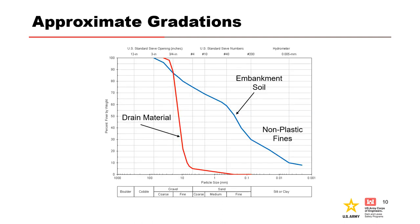The zone 1 embankment soil is broadly graded with 30% fines, 50% sand, and 20% gravel, with approximately 15 to 20% cobbles and boulders. The drain was supposed to be designed using Soil Conservation Service criteria in effect at the time from 1968. The SCS design criteria required the filter be designed using a gradation curve for base material finer than one inch.